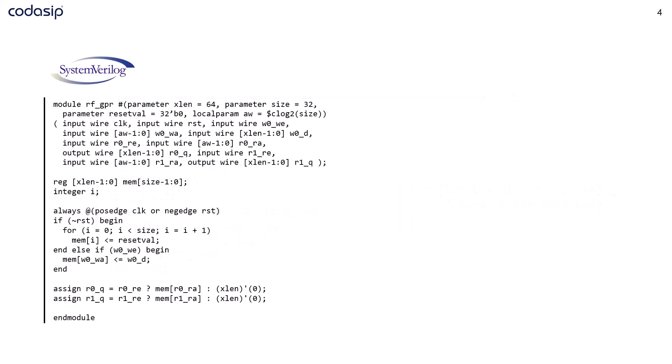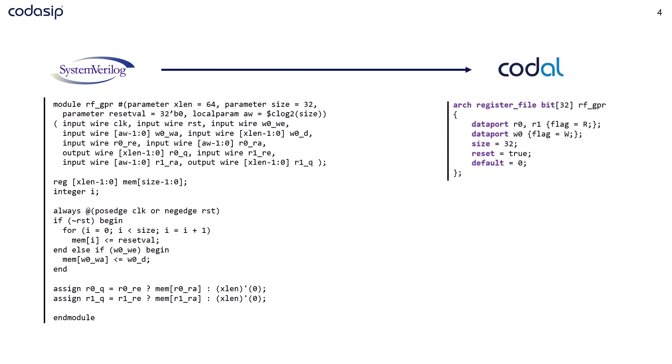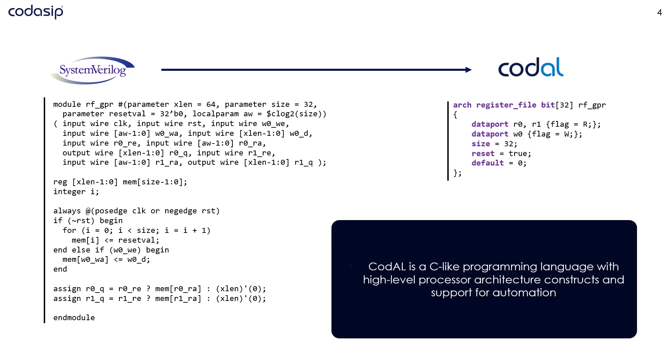You can see the same pattern when comparing a register file implemented in SystemVerilog and Codal. SystemVerilog is a generic hardware description language — it enables you to design a register file, but you have to really define what it is and how it works. Codal is a more abstract language, and what is even more important is that it was designed with only processor cores in mind, offering many high-level constructs making design of standard processor components, such as this register file, quite simple.